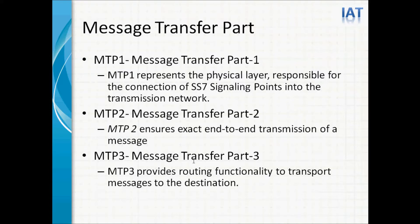MTP1 represents the physical layer, which is responsible for the connection of SS7 signaling points into the transmission network — this is the physical link established between two nodes. MTP2 ensures exact end-to-end transmission of a message; for each frame, if there is any error, MTP2 will be responsible for resending the frame. MTP3 provides routing functionality to transport the message to the destination.